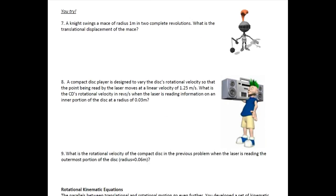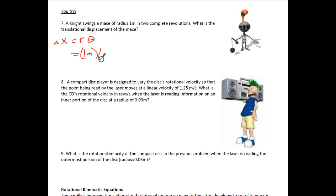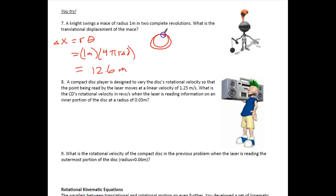Problem 7: a knight swings a mace with a radius of 1 meter completing 2 revolutions. What is the translational displacement? Displacement x equals radius times the angle turned through. Two revolutions = 4π radians. So x = 1 meter × 4π ≈ 12.6 meters. It's as if you unrolled the string — the mace traveled 12.6 meters total.